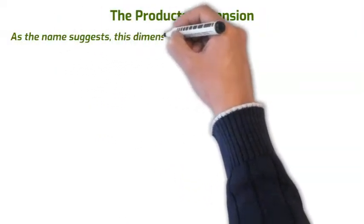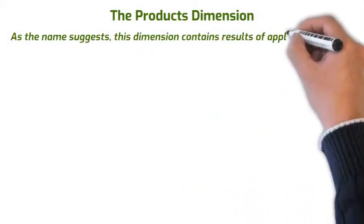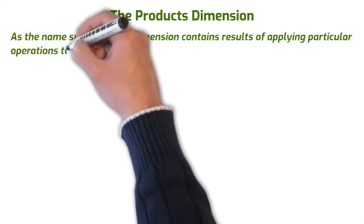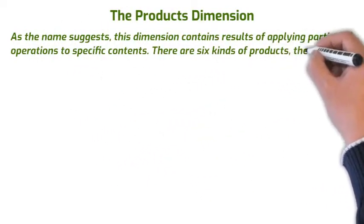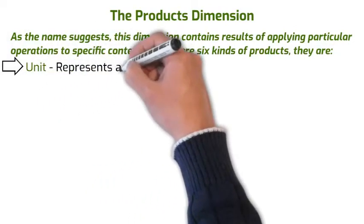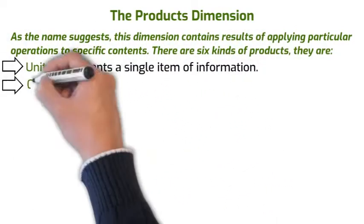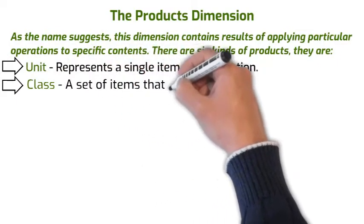As the name suggests, this dimension contains results of applying particular operations to specific contents. There are six kinds of products. They are Unit: Represents a single item of information. Class: A set of items that share some attributes.